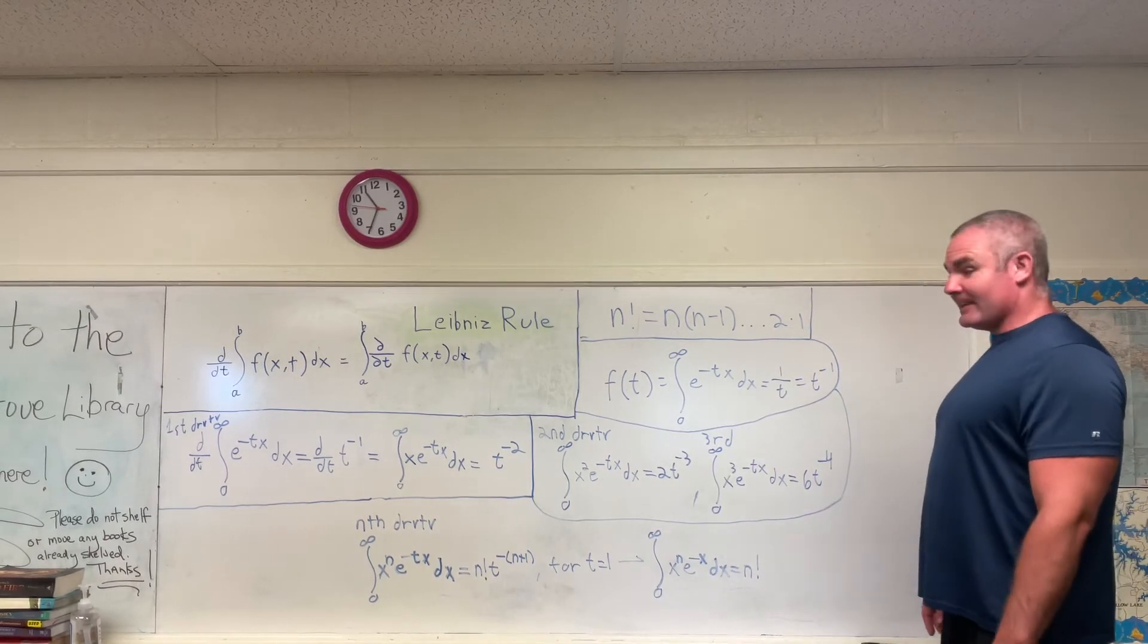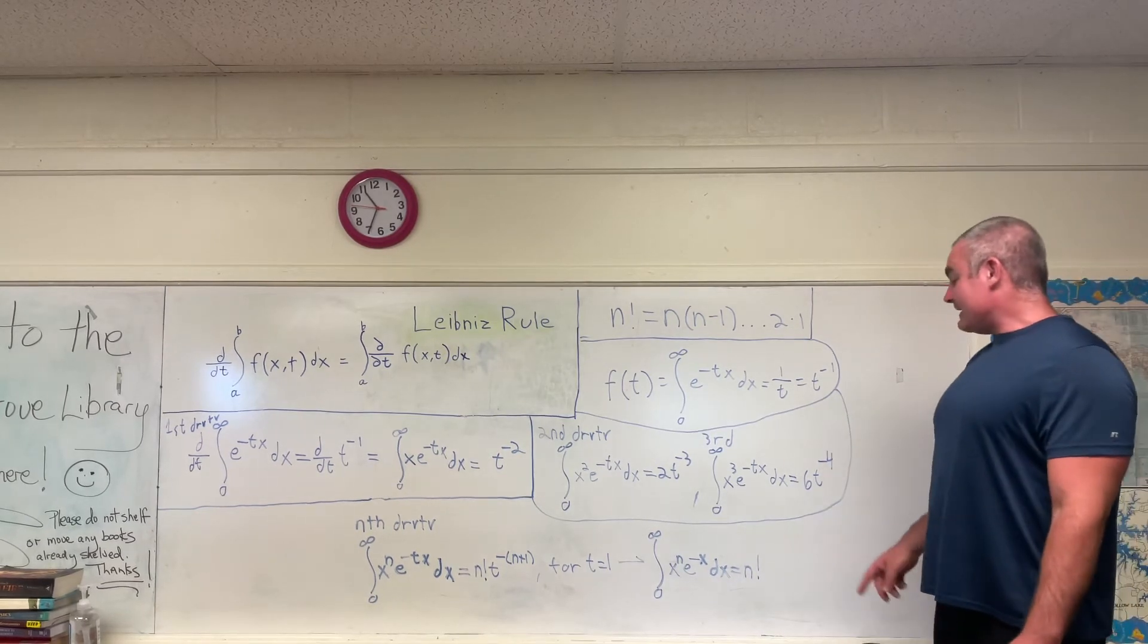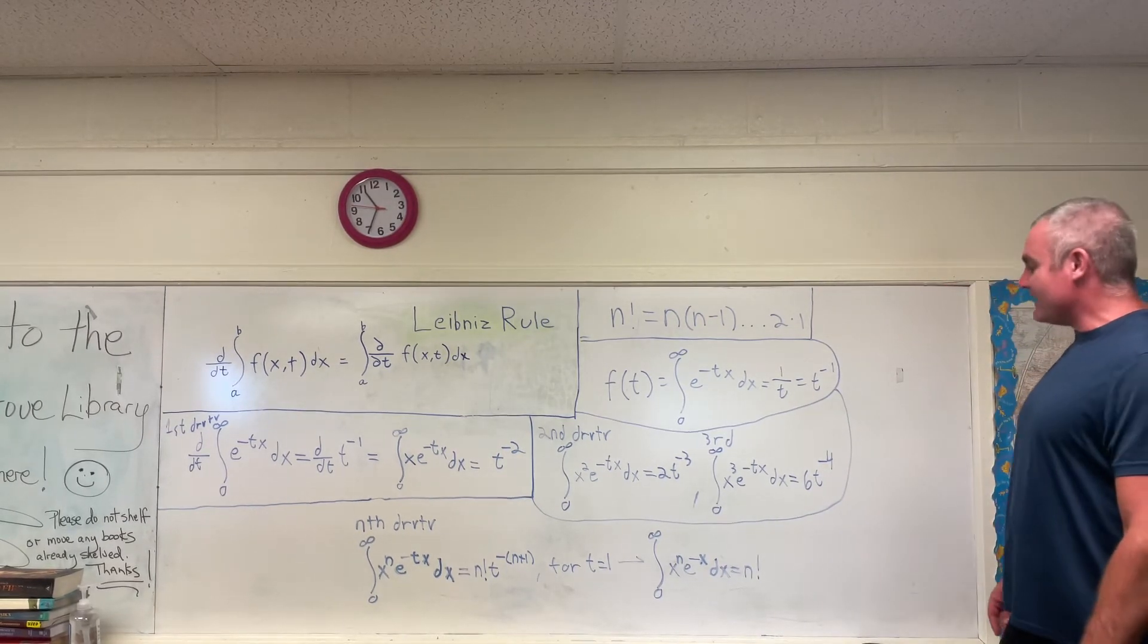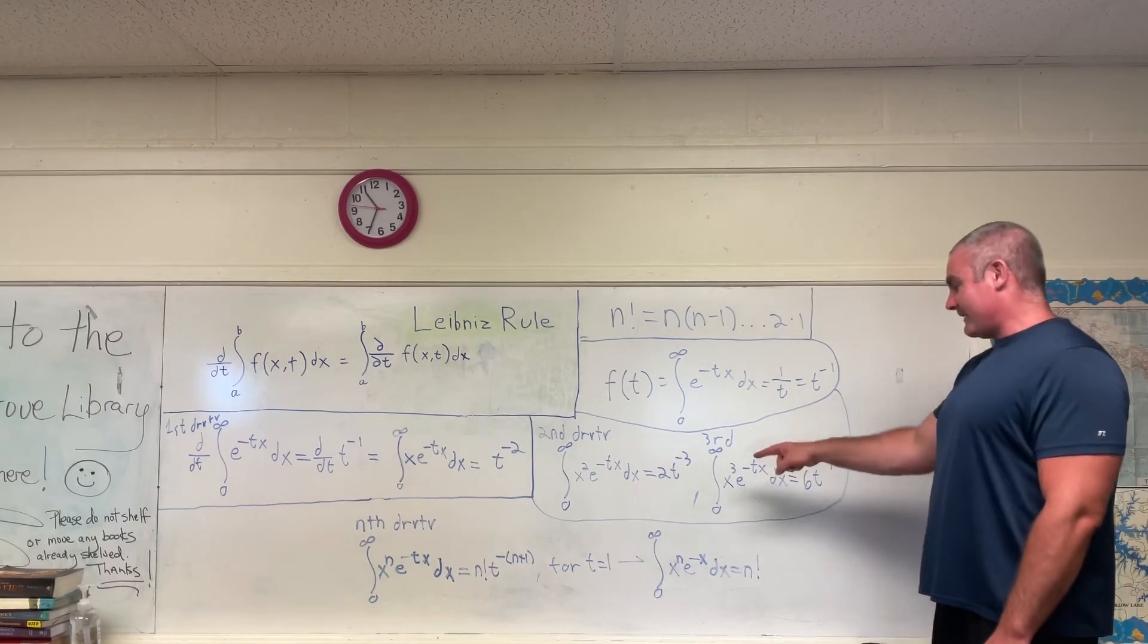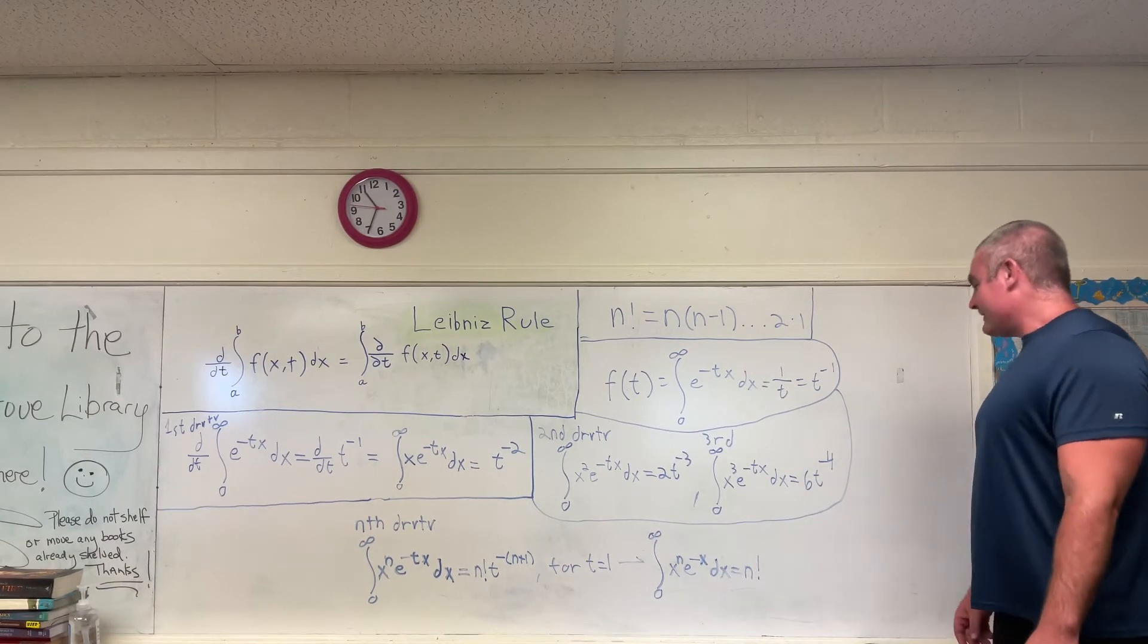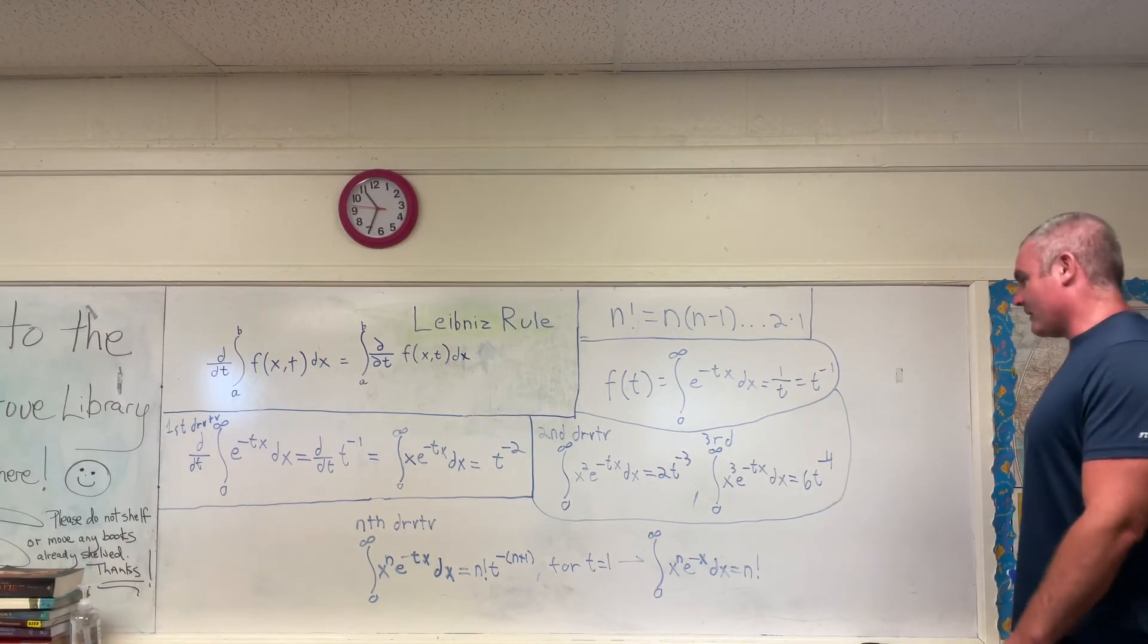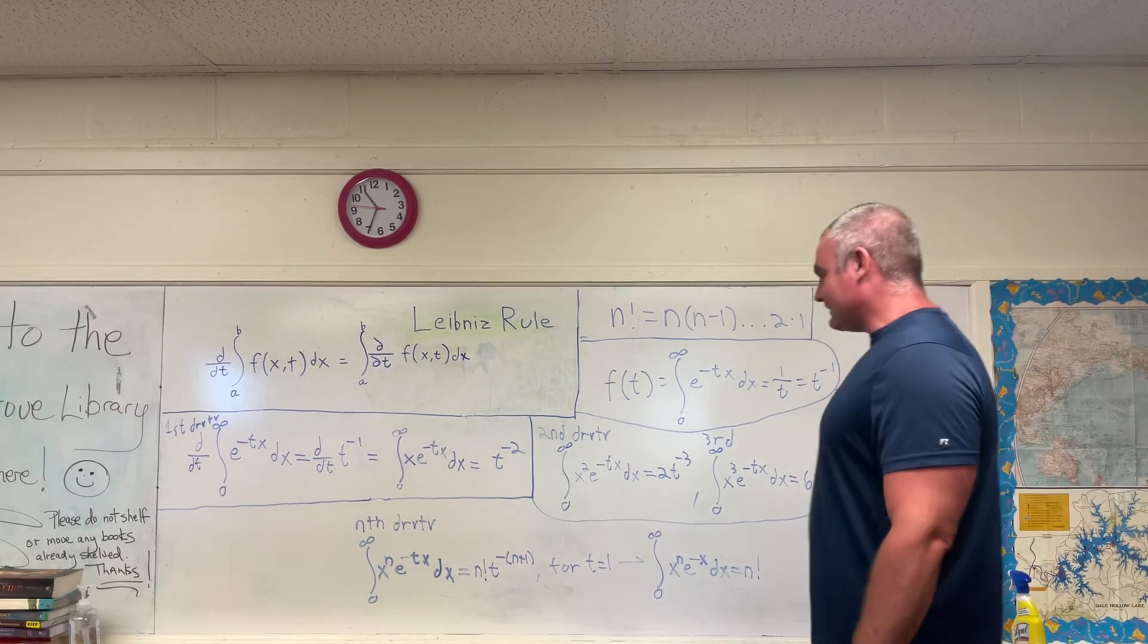And if we take yet another derivative, we'll find that the integral from 0 to infinity of x cubed e to the negative tx dx is equal to 6t to the negative 4th. And you all probably see the pattern that's happening right now.